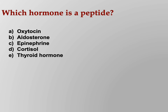Which hormone is a peptide? Would that be oxytocin, aldosterone, epinephrine, cortisol, or thyroid hormone? I would expect you to know for each hormone which category it falls into — peptide, steroid, or monoamine. The answer is oxytocin.